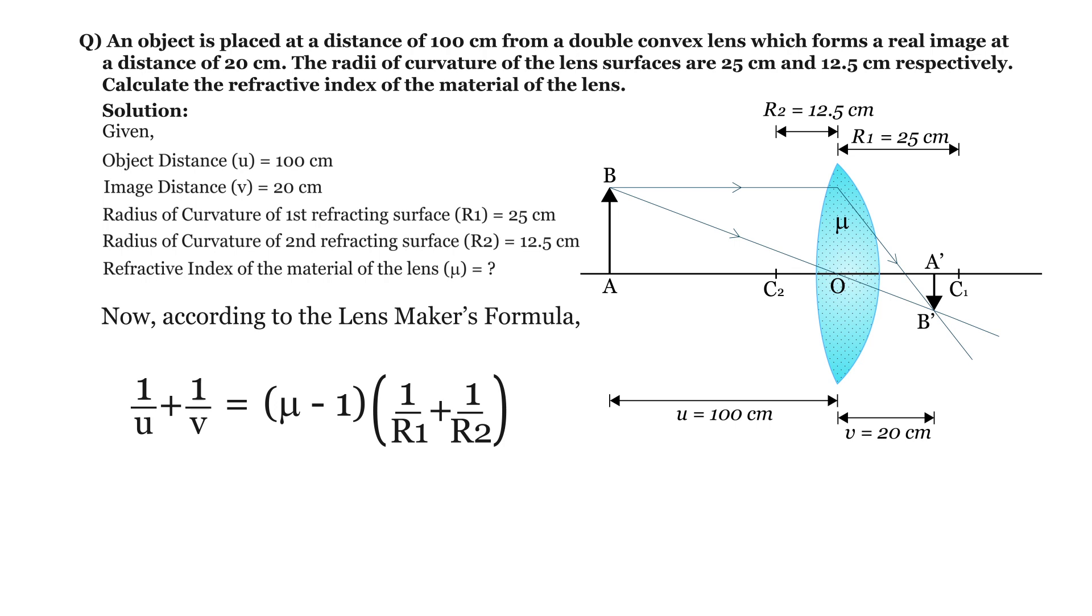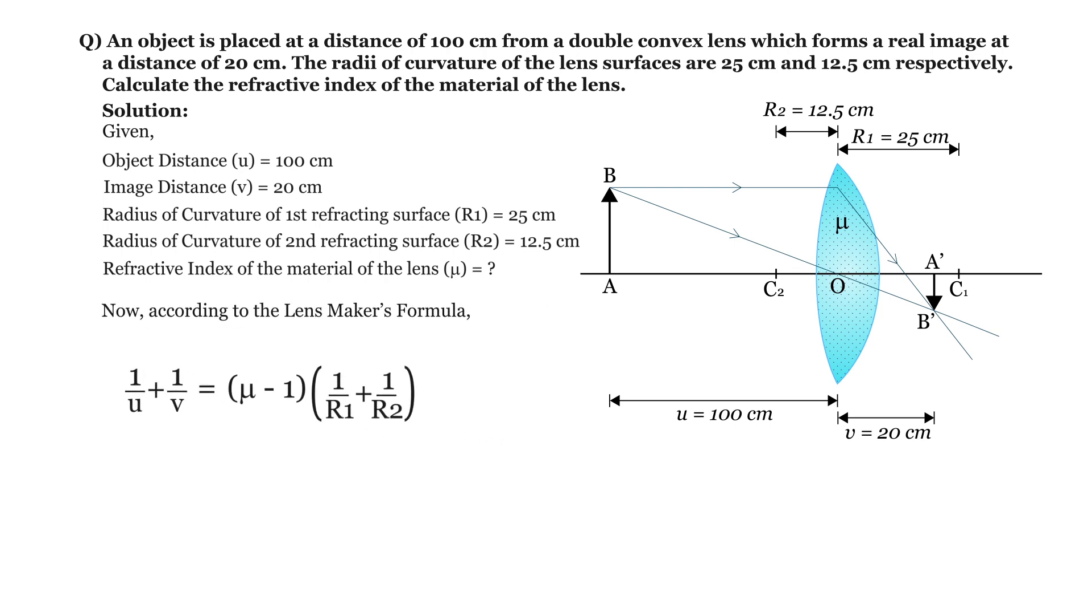In this equation, we know all values except mu. So let's substitute: u equals 100 centimeters and v equals 20 centimeters. Therefore, 1 by 100 plus 1 by 20 equals 3 by 50.